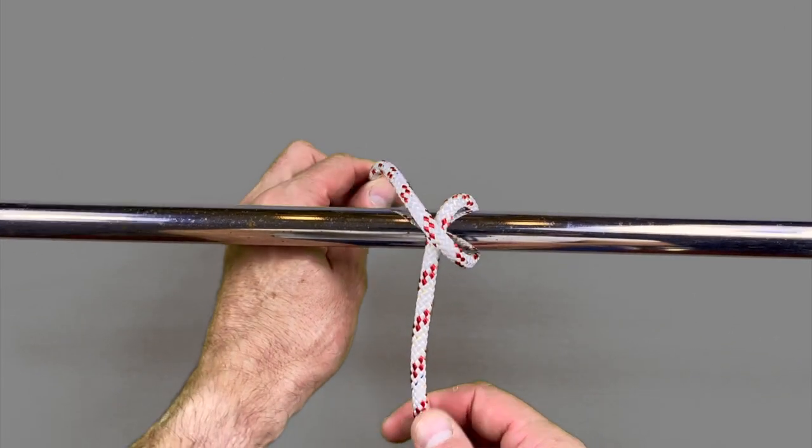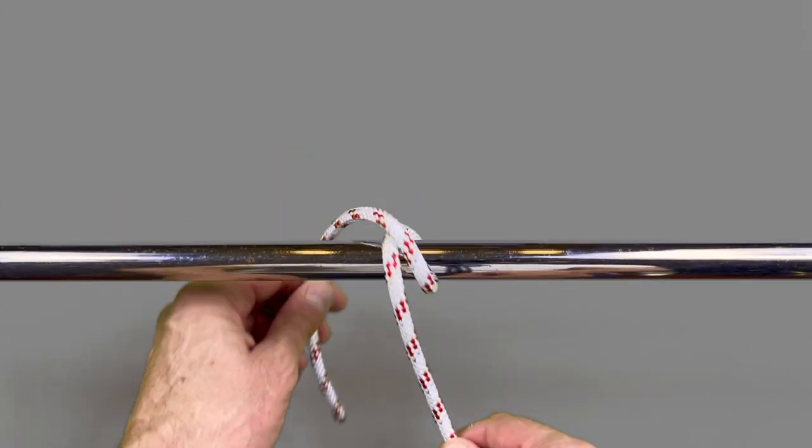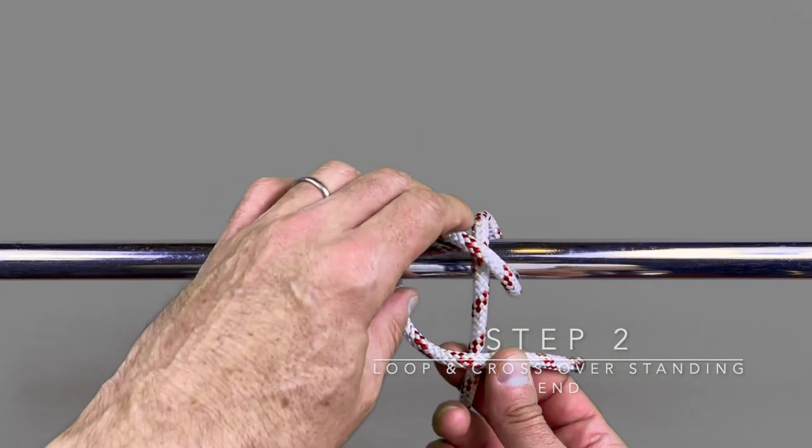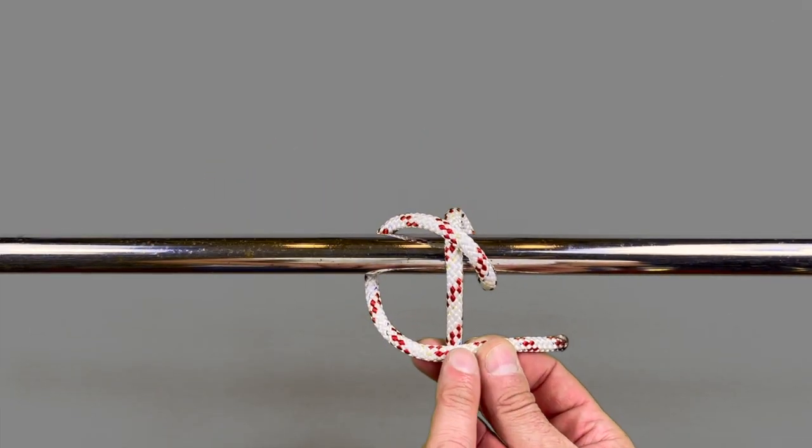Step two, you take the working end for a second loop around the item you're looking to constrict and then bring it over the top of the standing end.